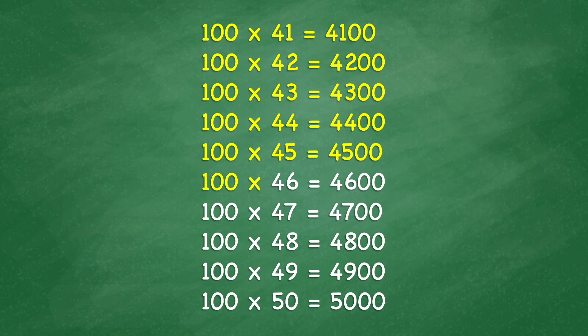100 times 46 equals 4,600. 100 times 47 equals 4,700. 100 times 48 equals 4,800. 100 times 49 equals 4,900. 100 times 50 equals 5,000.